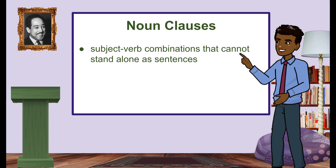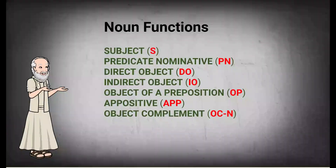Noun clauses are subject-verb combinations that cannot stand alone as sentences. They serve noun functions in sentences, so let's pause to review the seven noun functions. In your notes, write down the following seven noun functions — it's going to be important to remember them in order to identify and to use noun clauses correctly.